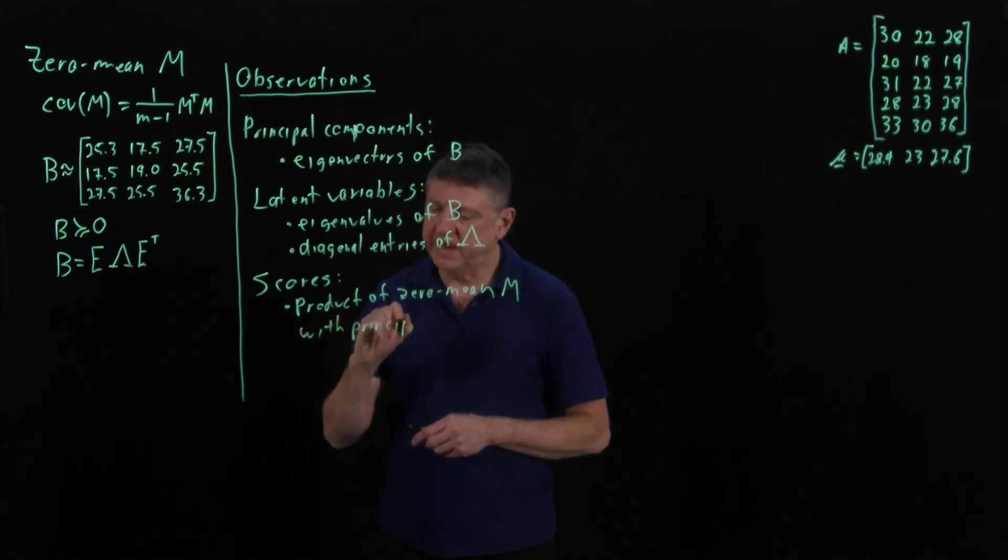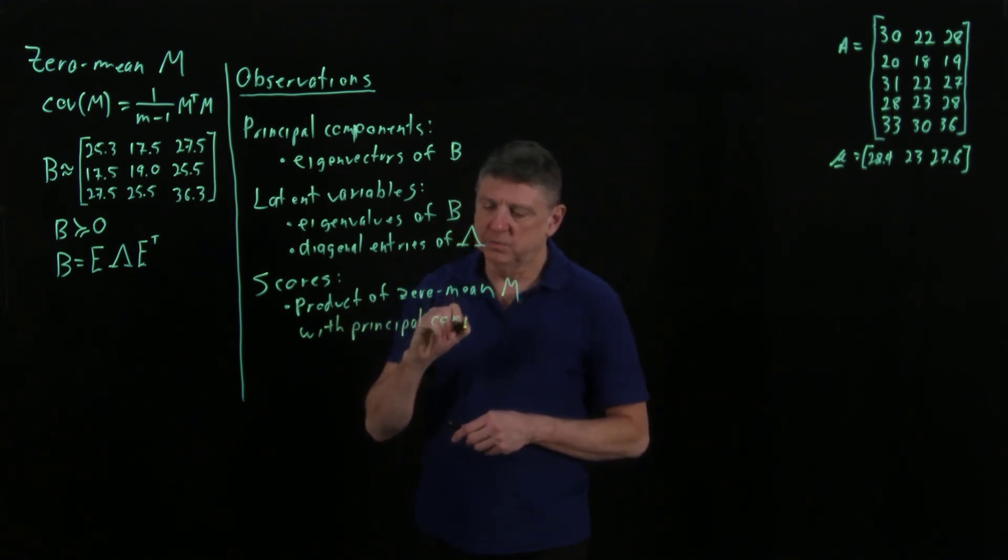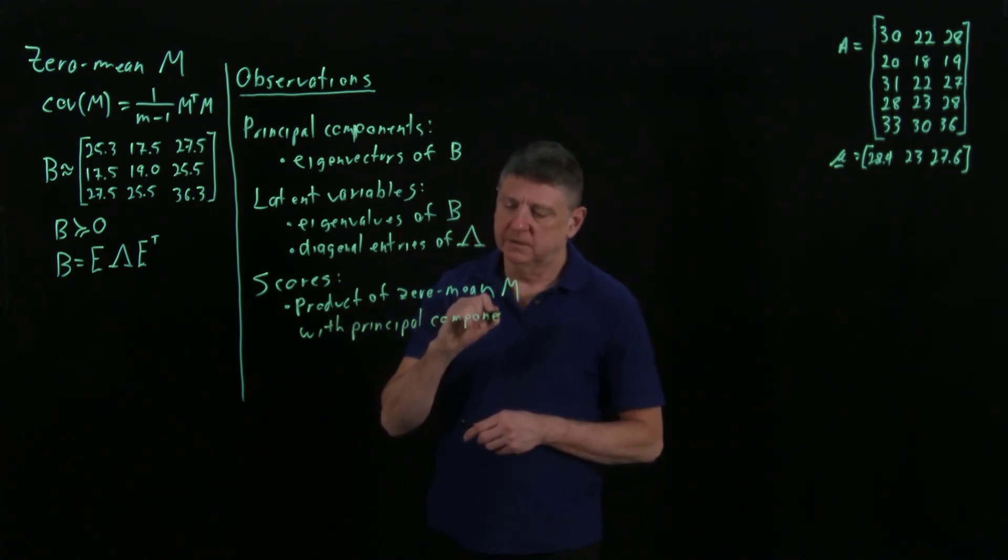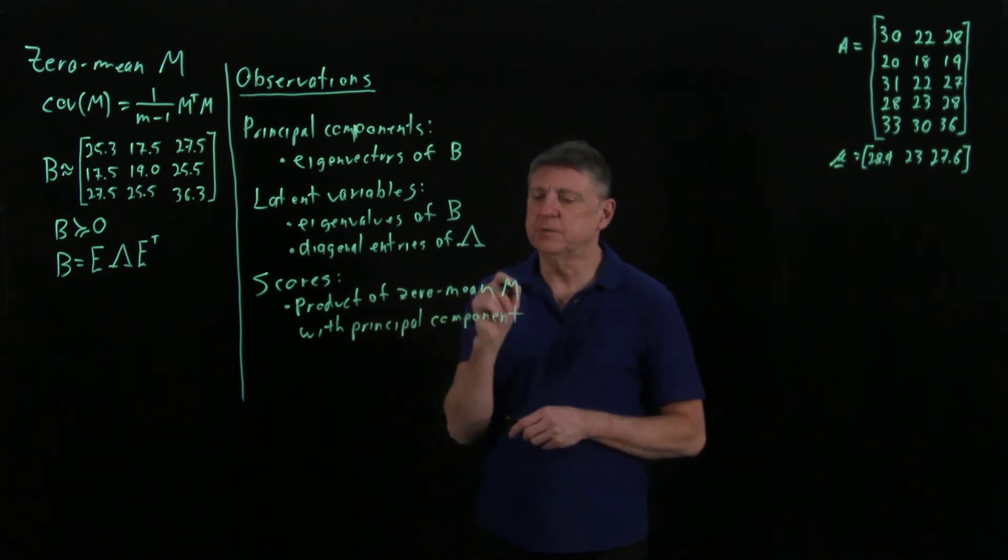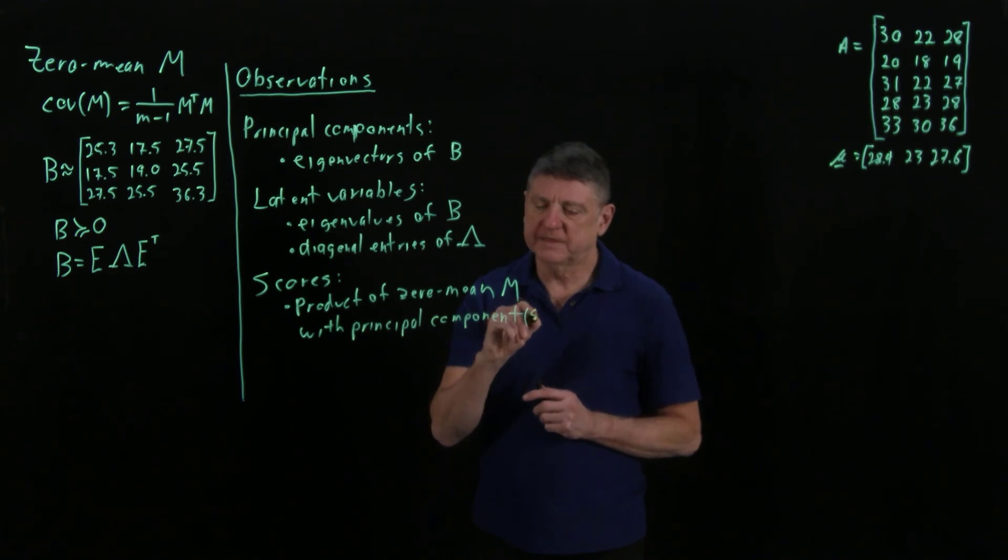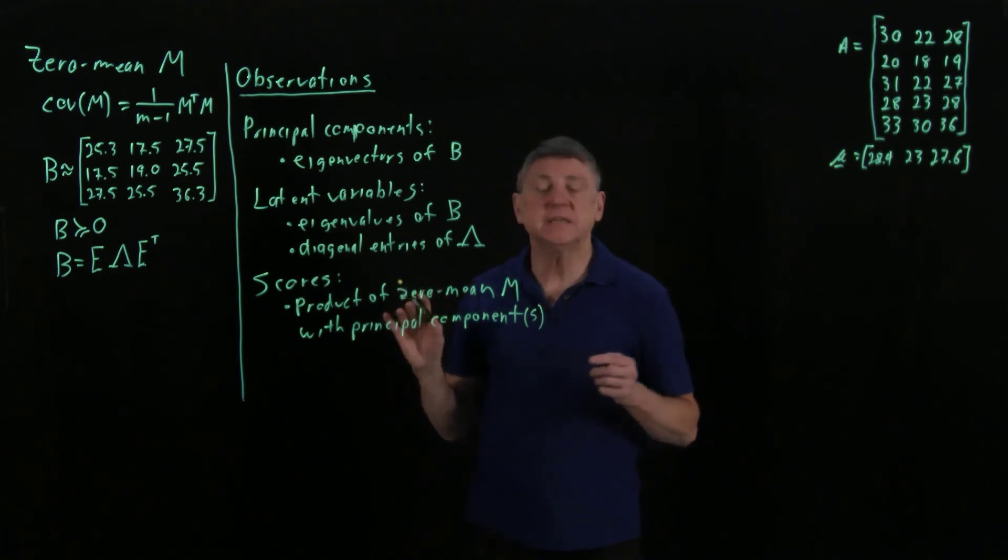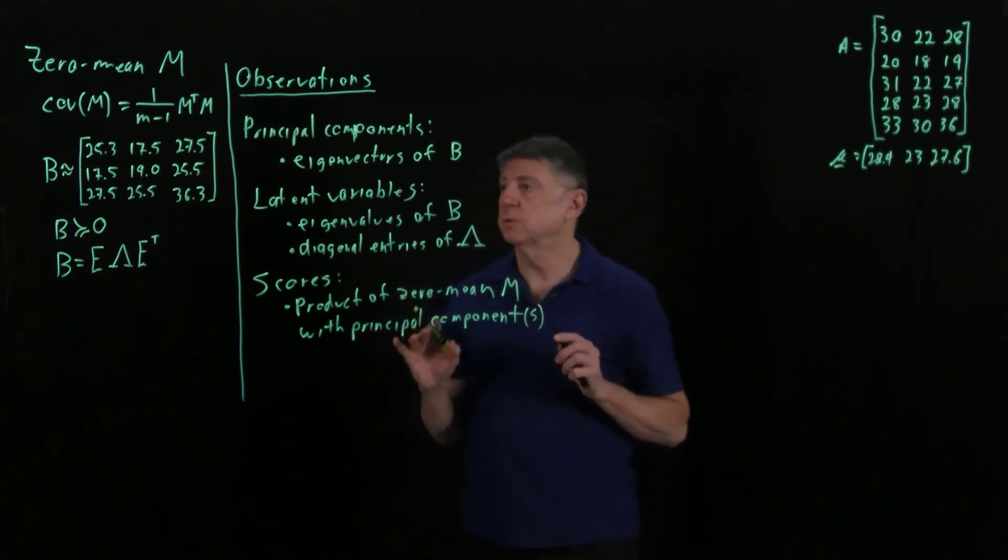If we had only one score, that score would be the product of this zero-mean matrix M - I'll put parenthesis S because we don't know whether you need one or more.